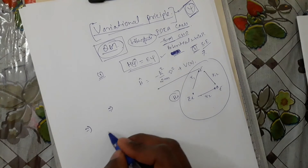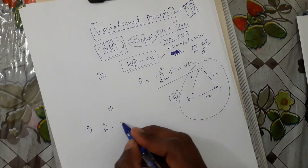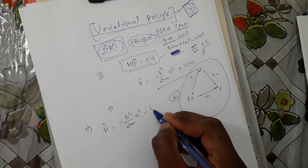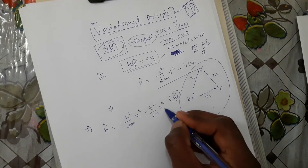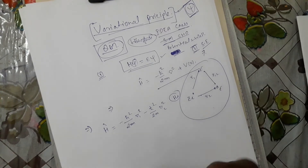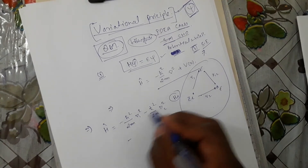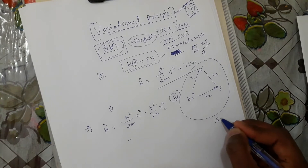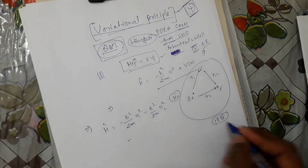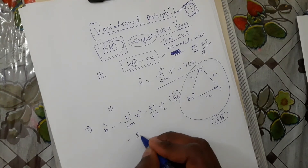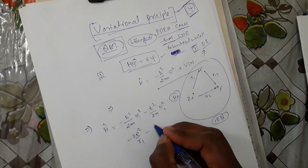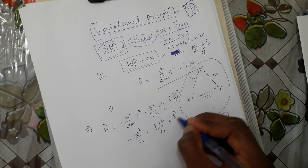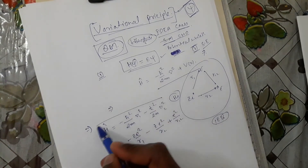When you write the Hamiltonian for helium, it is: −(ℏ²/2m)(∇₁² + ∇₂²) for the kinetic energy of both electrons, minus Ze²/R1 minus Ze²/R2 for the electron-nucleus interactions, plus e²/R12 for the electron-electron interaction. You cannot solve this Hamiltonian analytically.